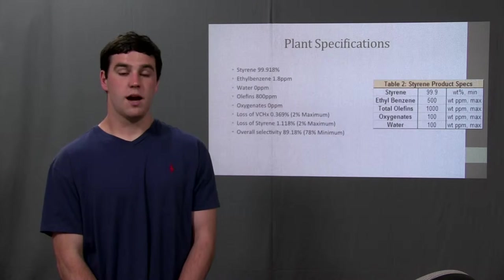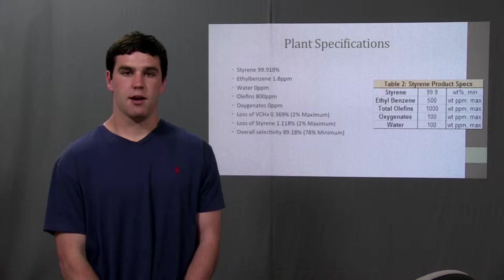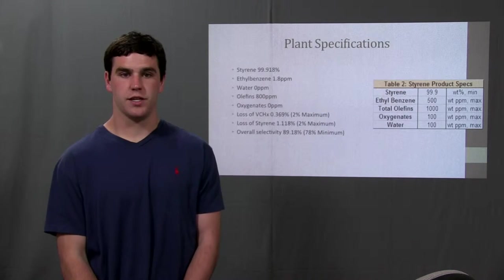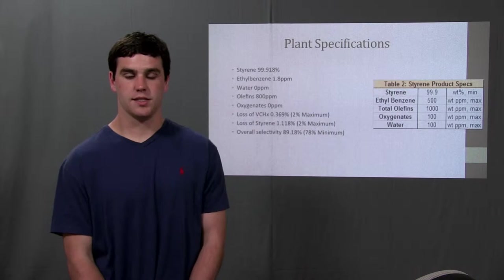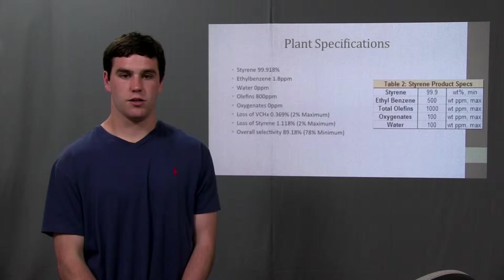Two options were available for the location of the plant. The first option was Taiwan. A Taiwan plant has an advantage in that the mixed C4s feed comes directly from an existing plant next to it. In Asia, the styrene market is larger.